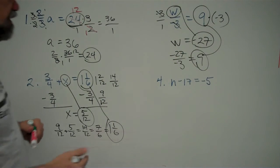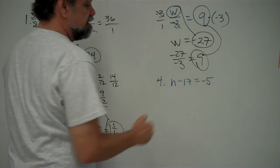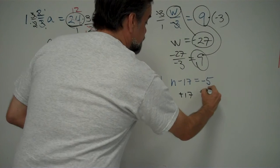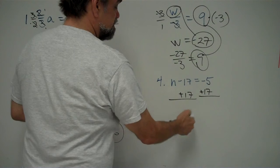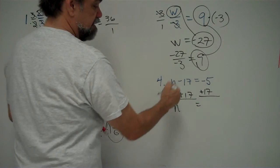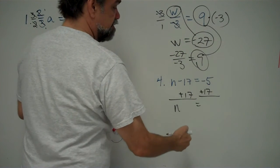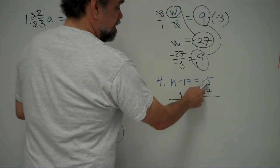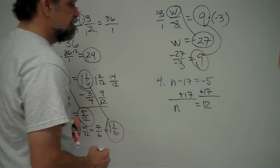Last one. This time, what's happening to my unknown? I'm subtracting 17. So, what am I going to do to solve this? I'm going to add 17. You always do the inverse operation. N minus 17 plus 17, those things just cancel each other out, and I get N equals. Minus 17 plus 17 is like adding 0. Negative 5 plus 17 is, careful with those positives and negatives. Negative 5 plus 17 is just like saying 17 minus 5, which is 12. And N equals 12.